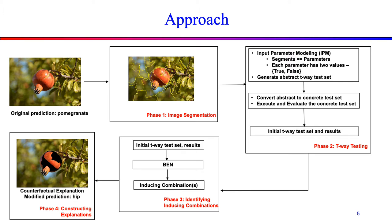I will explain our approach with an example. Assume for the input image shown on the top left, a pre-trained model produces a classification as pomegranate. To produce a counterfactual explanation using our approach, we first perform image segmentation and identify a number of segments. Next, we develop an input parameter model and generate a T-way test set. Each segment is mapped as a boolean parameter — each parameter will have a value of true or false. Then we generate a T-way test set. Each test can be used to derive a test image from the original image. A segment is masked in the test image if the corresponding parameter is true in the test; otherwise, a segment is retained without modification.